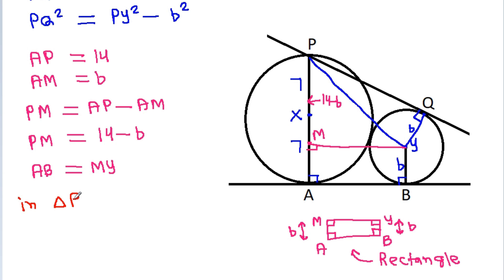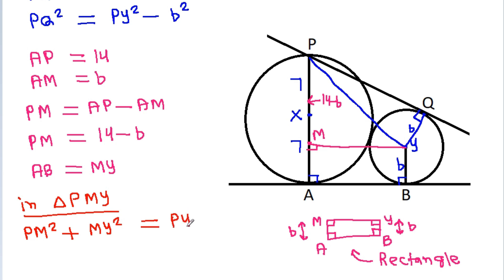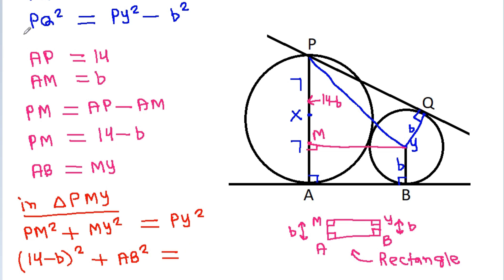In triangle PMY: PM² + MY² = PY². So PY² = PQ² + b², meaning (14 - b)² + MY² = PY², and PY² = PQ² + b².